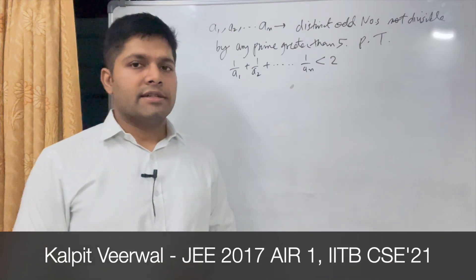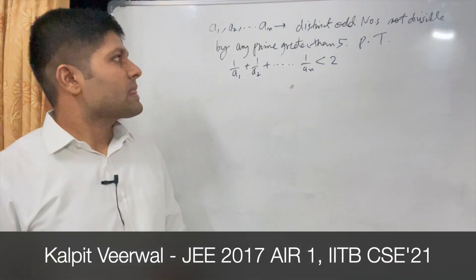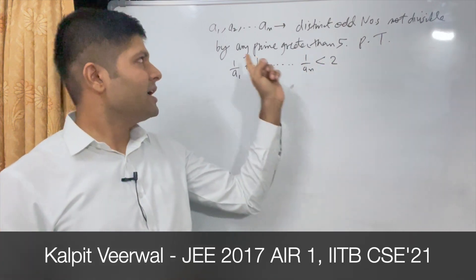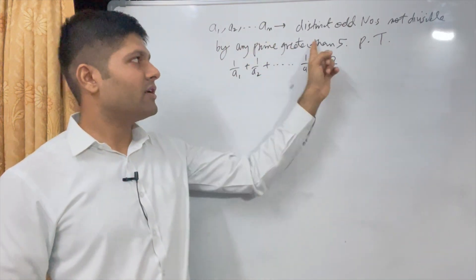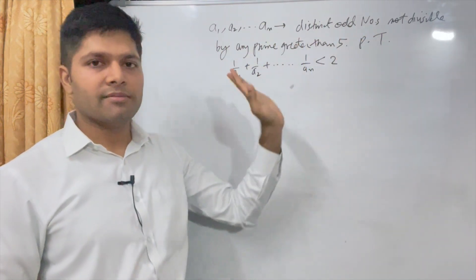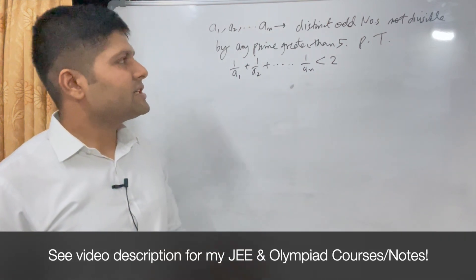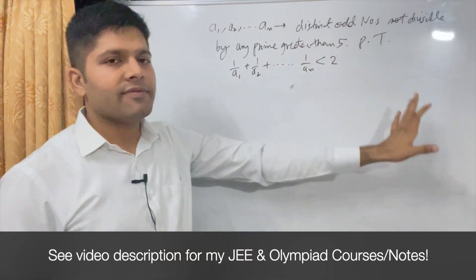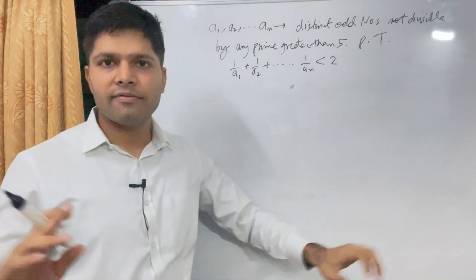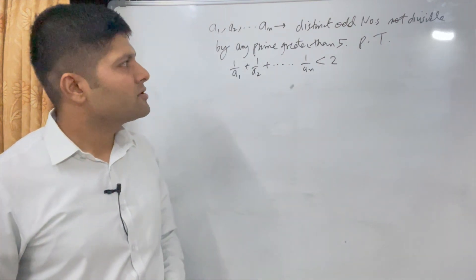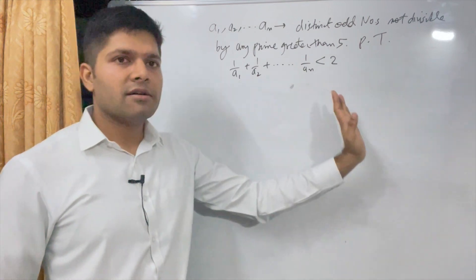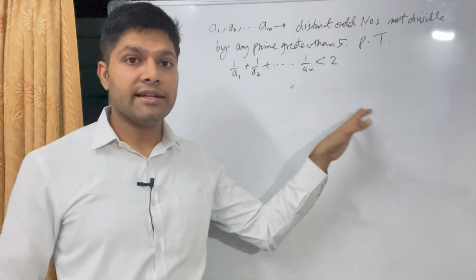I came across a rather interesting problem. We are given n distinct odd natural numbers a1 to an. These are odd, these are distinct, and these are all natural numbers which are not divisible by any prime greater than 5. We have to prove that the inverse summation of these numbers is strictly less than 2 — there is no equality here.